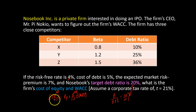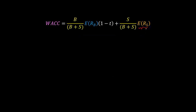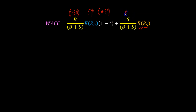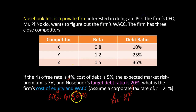Without an equity beta for Nosebook, we can't calculate its expected return on equity, which is also needed for the WACC calculation. For Nosebook, we know the target debt ratio is 20%, the cost of debt is 5%, the corporate tax rate is 21% (so one minus tax is 0.79), and the target equity ratio is therefore 0.80. All this is given — but we are missing the equity beta.